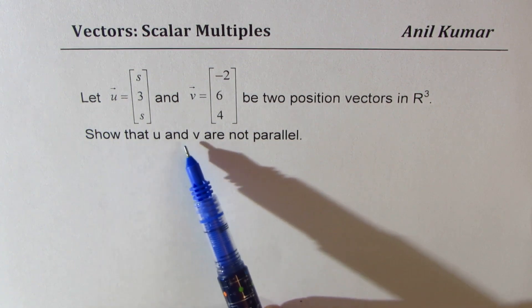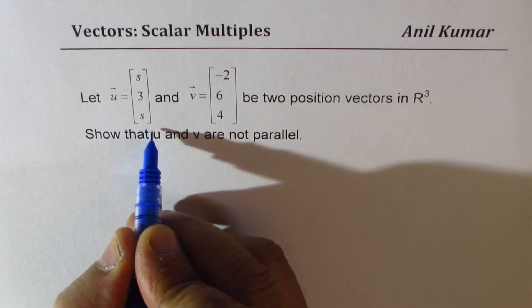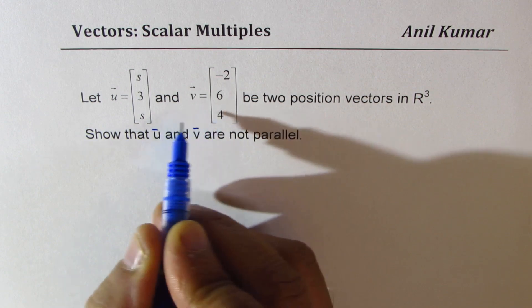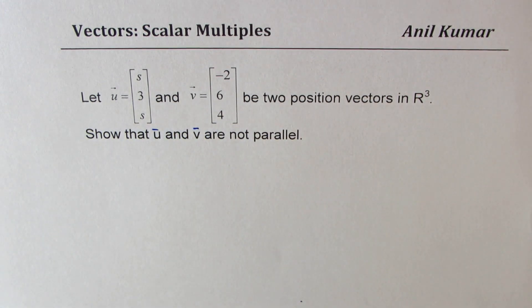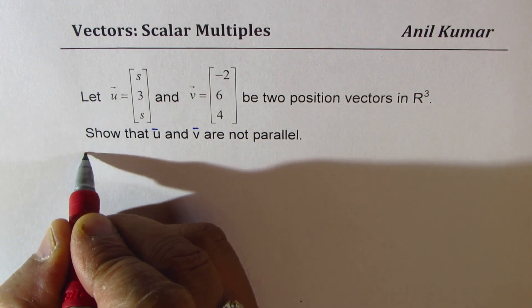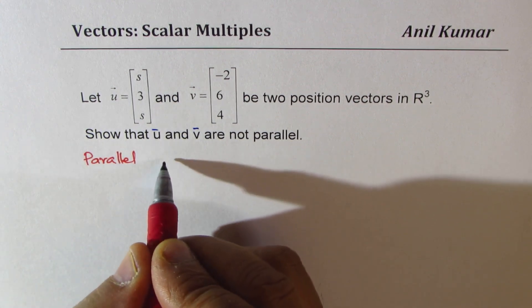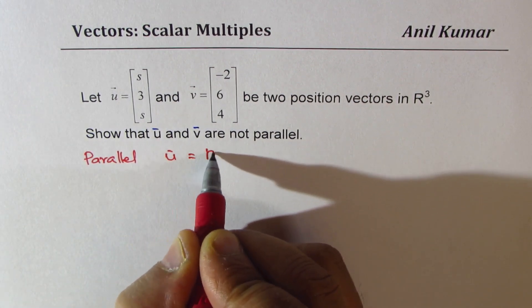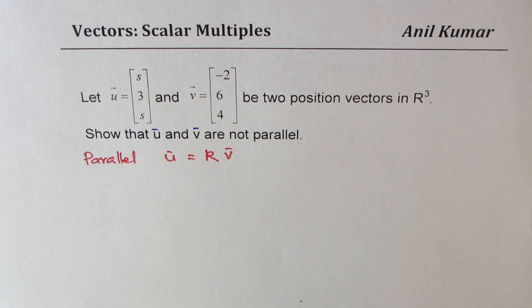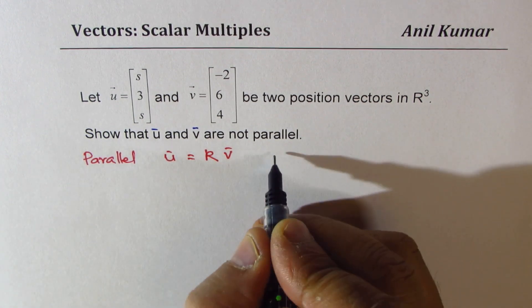Show that u and v are not parallel. That is what we need to show. Now when we say parallel vectors, it means what? Vectors are parallel if one vector is a scalar multiple of the other. For parallel vectors, the condition is scalar multiple.